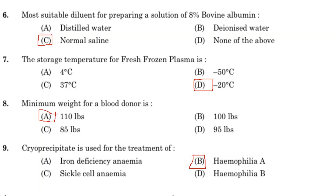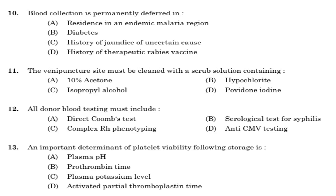Tenth question: blood collection is permanently deferred in. Option A: residence in an endemic malaria region. Option B: diabetes. Option C: history of jaundice of uncertain cause. Option D: history of therapeutic rabies vaccine. Answer is Option C, history of jaundice of uncertain cause.